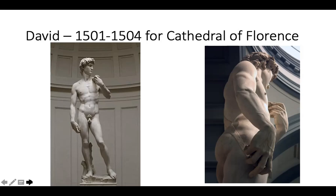When Michelangelo completes the sculpture three years later, it's recognized immediately as extraordinarily beautiful — and also impossibly difficult to engineer in terms of getting it up onto the buttress. So a committee of about 30 people — of which Leonardo was actually one — has to decide where in Florence to place this incredible, very powerful statue.